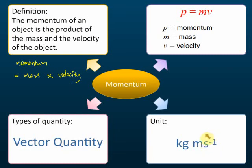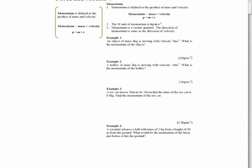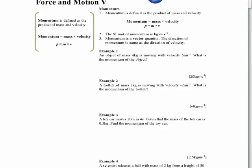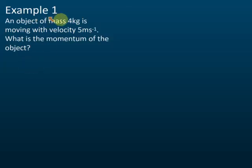That's what you need to know about momentum. Now, Example 1 from your notes: an object of mass 4 kg is moving with a velocity of 5 meters per second. What is the momentum of the object? This one is simple and easy.